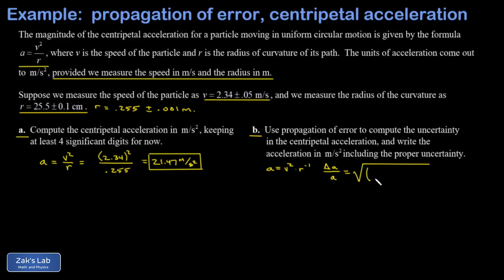I apply my propagation of errors formula. The exponent on each of these factors comes out in front, so I have a 2, and then the uncertainty in v divided by v itself, and that's all squared. In the second term, I bring the exponent out in front, but that's a negative one. When I square it, it just goes away, so I have delta r over r all squared.